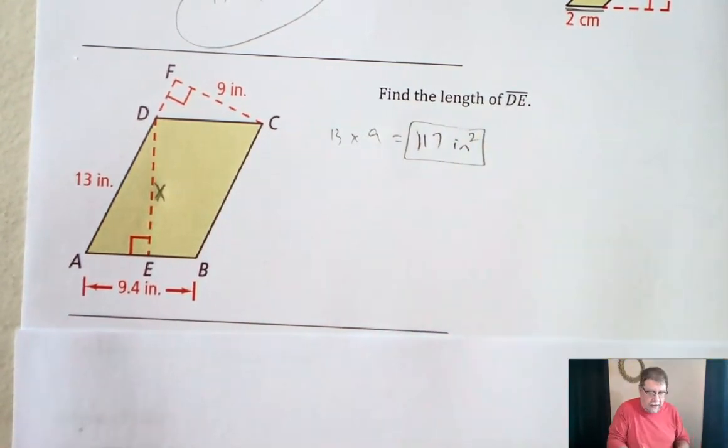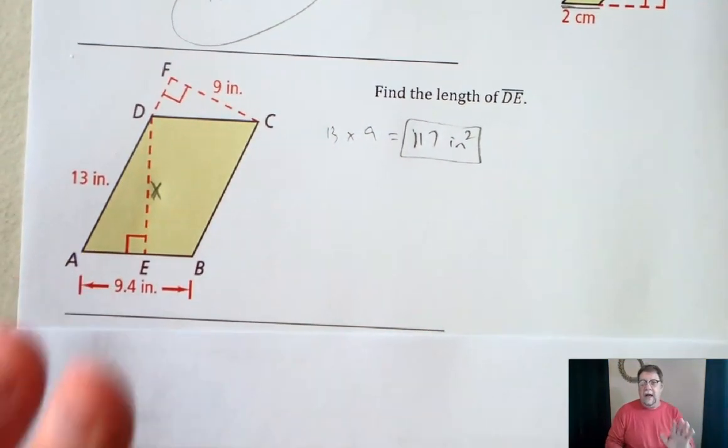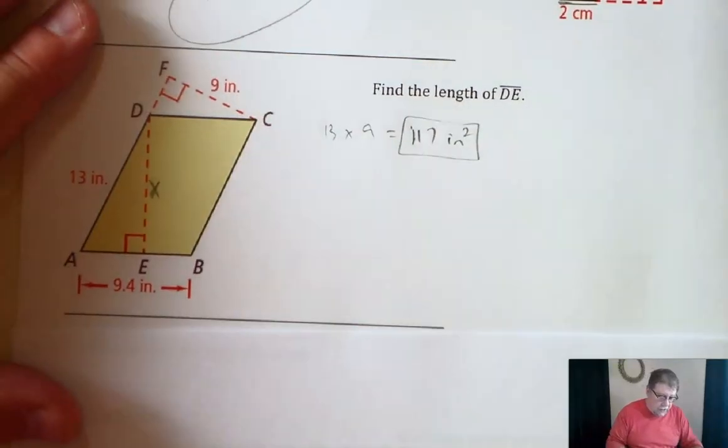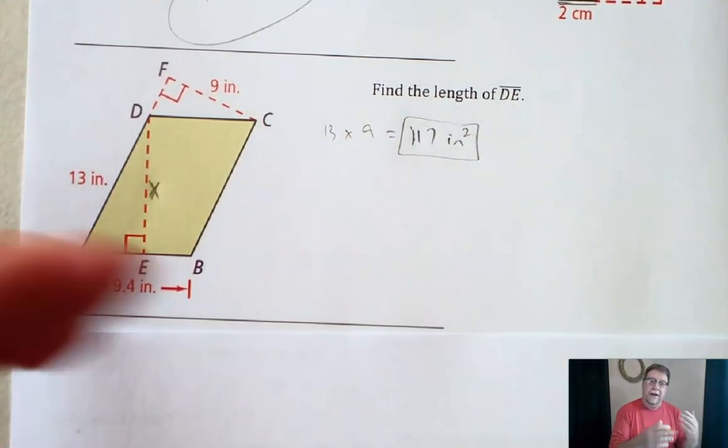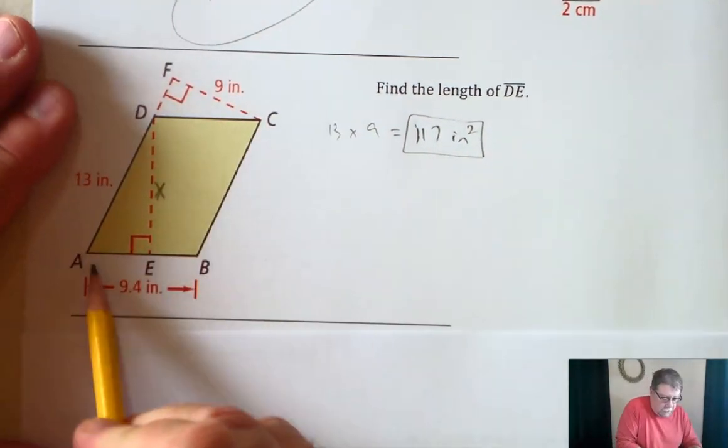Now that's not the answer. We're asking for the length of DE, whatever this X is. So now we've got a second part to the problem. The second part would be to now find another base and another height, and that's where this comes in to play.